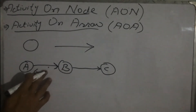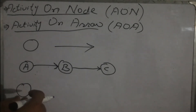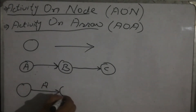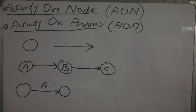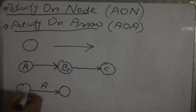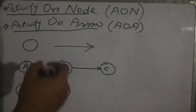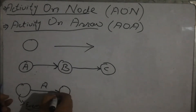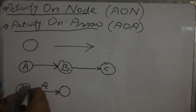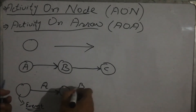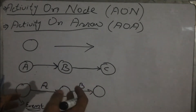In the Activity on Arrow technique, the activity is represented by the arrow. We start from one node, the arrow represents activity A, and we end at another node. The node in this case represents just a small event that does not consume any time or resources — it is just a moment representing either the start or end of an activity. The arrowhead represents the end of the activity, and the tail represents the start.